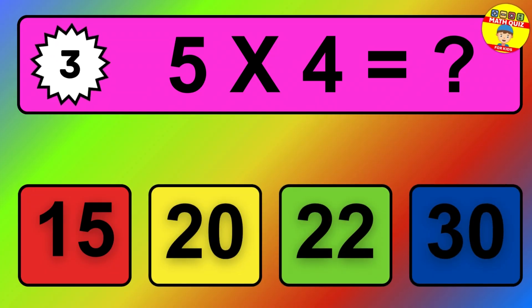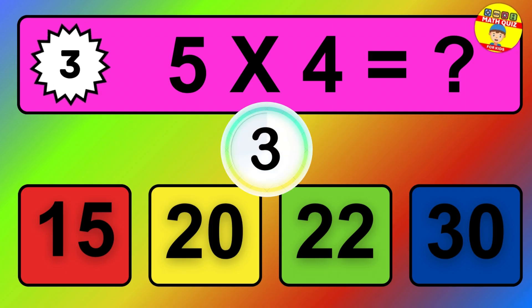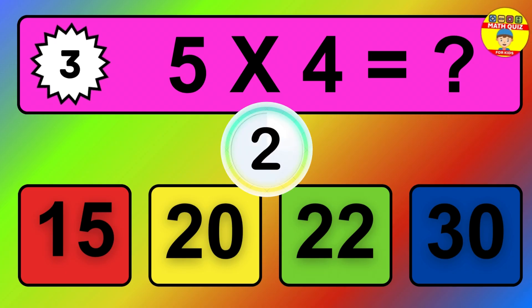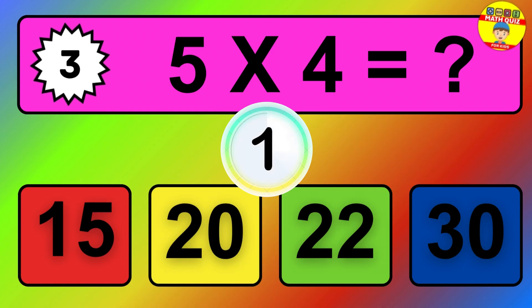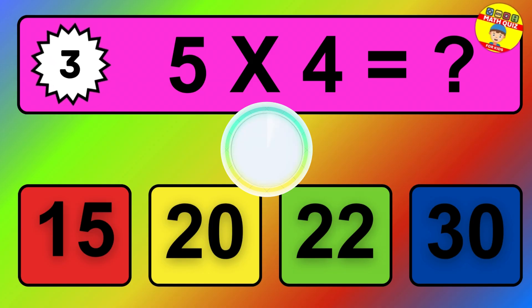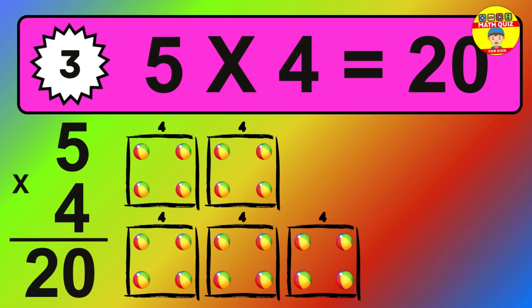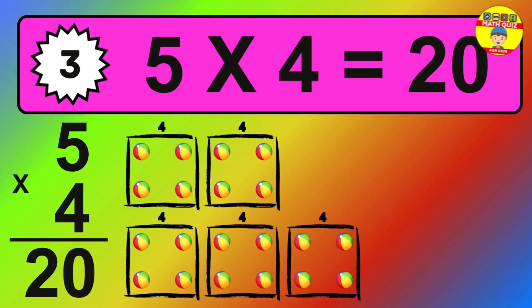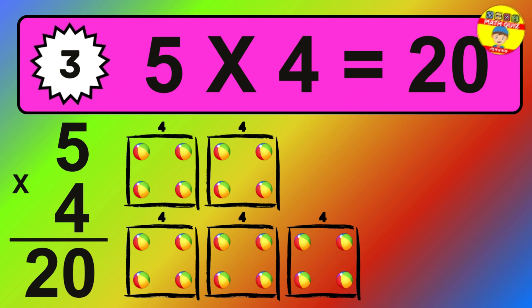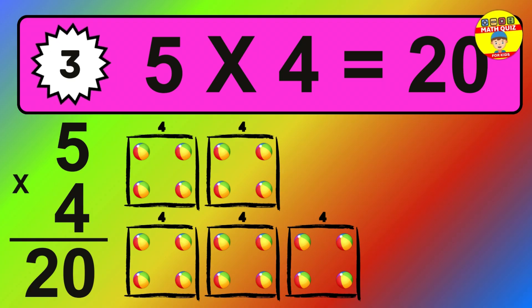Question three: five times four equals what? The answer is: five times four is 20. To calculate, we have five groups with four balls each one. So how many balls do we have? 20 balls.